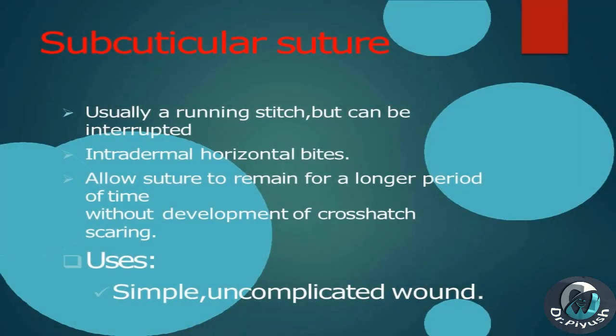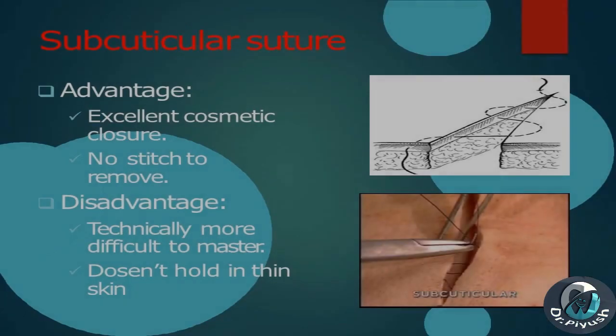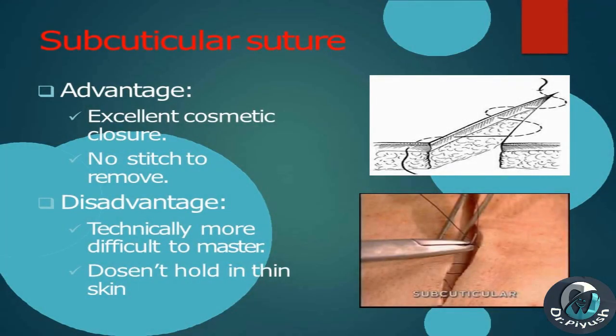Subcuticular suture: usually a running stitch, but can be interrupted intradermal horizontal bites. Allows the suture to remain for a longer period of time without development of crosshatch scarring. Uses: simple, uncomplicated wounds. Advantages: excellent cosmetic closure, no stitch marks to remove. Disadvantages: technically more difficult to master, does not hold in thin skin.